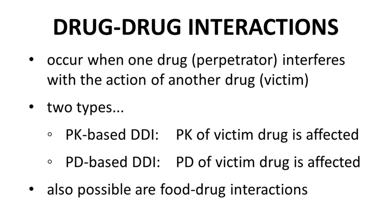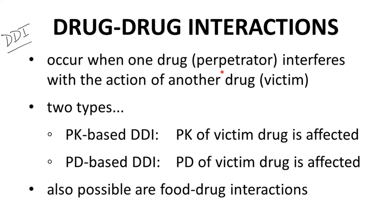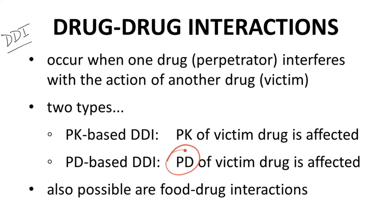Drug-drug interactions, also called DDIs, and sometimes called just drug interactions, occur when one drug — the perpetrator of the DDI — interferes with the action of another drug, the victim of the DDI. There are two types of DDIs: PK-based, because the DDI affects the pharmacokinetics of the victim drug, and PD-based, because the DDI affects the pharmacodynamics of the victim drug. We will focus on PK-based DDIs in this discussion.